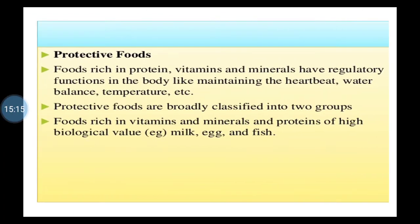The third category is protective foods. Some foods are called protective foods — they are rich in proteins, vitamins, and minerals, and they have regulatory functions in the body, like maintaining heartbeat, water balance, and temperature. Protective foods rich in vitamins, minerals, and proteins of high biological value include milk, egg, and fish. Green leafy vegetables are also under protective foods because they protect the body against infections, diseases, and ill health.